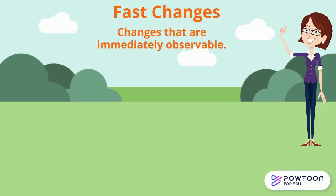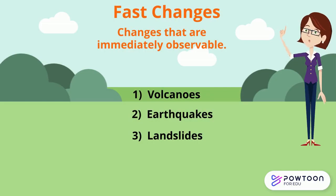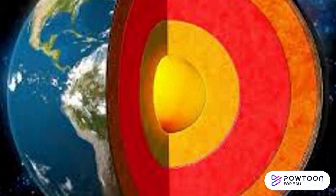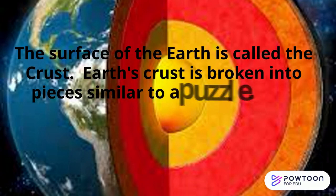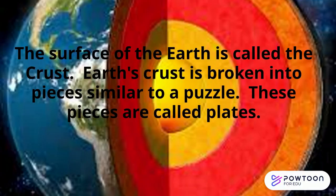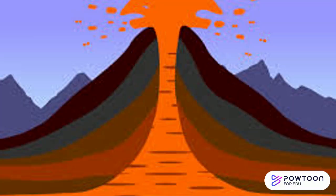Fast changes are changes that are immediately observable. These are caused by volcanoes, earthquakes, and landslides. The surface of the Earth is called the crust. Earth's crust is broken into pieces, kind of like a puzzle — these pieces are called plates.